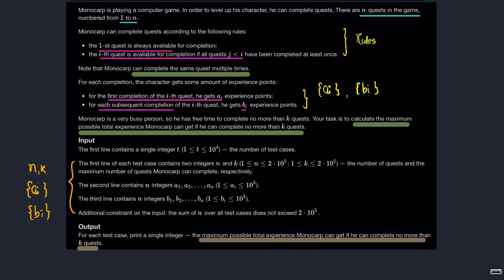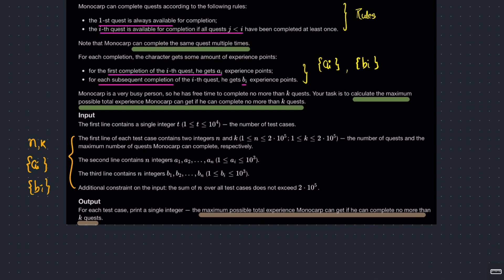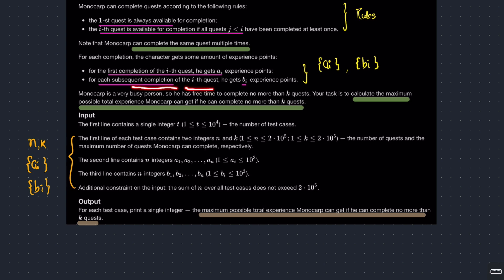There are some rules: the first quest is always available, and if you want to complete quest QI, you have to complete all the quests before it — for all J less than I, QJ must be completed. He can also complete a quest multiple times. There are two arrays: AI gives the experience for the first completion of quest I, and BI gives the experience for subsequent completions.